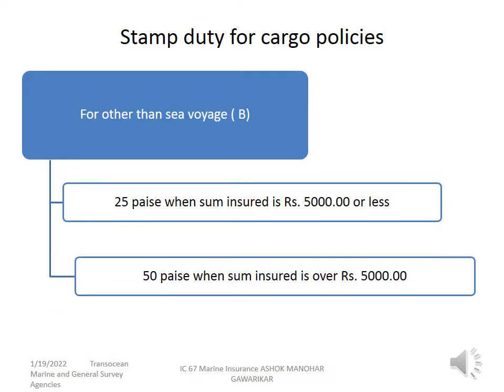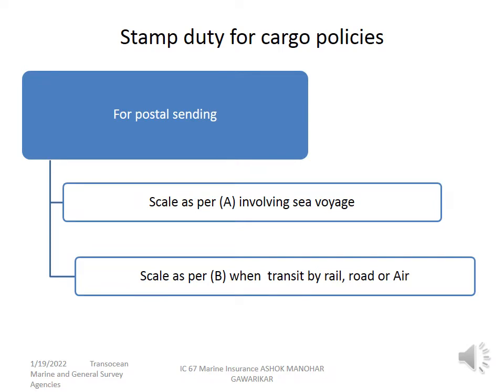For other than sea voyage, the stamp duty is 25 paise when the sum insured is Rs. 5,000 or less, and 50 paise when the sum insured is over Rs. 5,000. For a sea voyage it is different, and for a non-sea voyage it is a different stamp duty altogether. If it is a postal sending involving a sea voyage, it is as per Scale A; if it is going by rail, road or air — inland transit — then it is Scale B as prescribed.